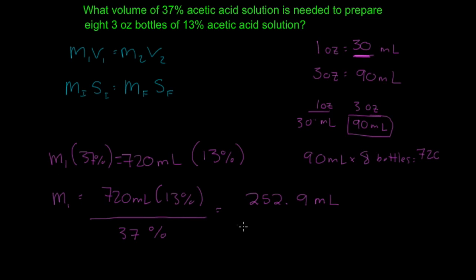Because we converted it to milliliters, the final amount is going to be in milliliters. So, we'll need 252.9 milliliters of the 37% to prepare 8 3-ounce bottles of a 13% acetic acid solution. And that is an example of a dilution.